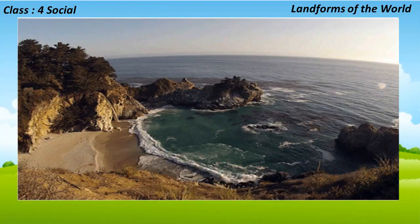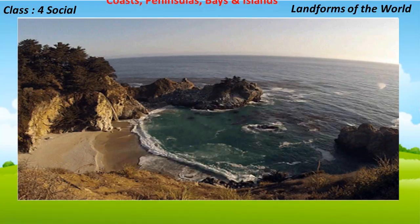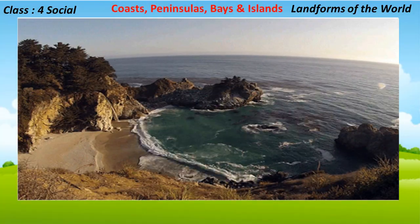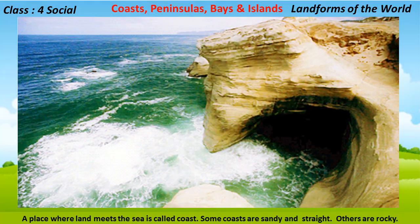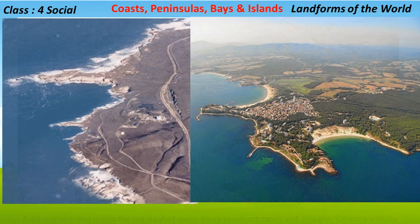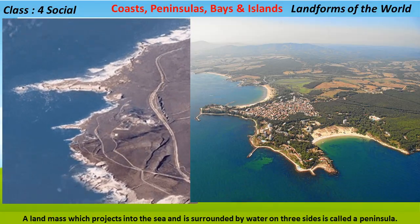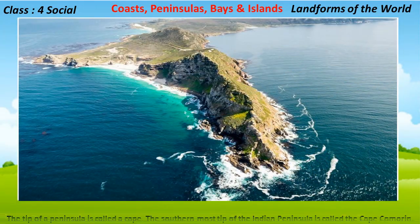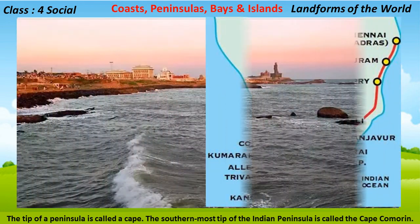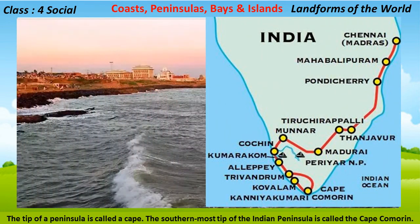A place where land meets the sea is called a coast. Some coasts are sandy and straight; others are rocky. A land mass which projects into the sea and is surrounded by water on three sides is called a peninsula. The tip of a peninsula is called a Cape. The southernmost tip of the Indian peninsula is called Cape Comorin.